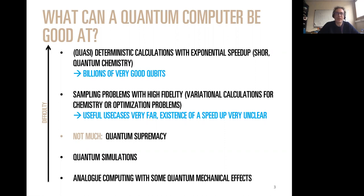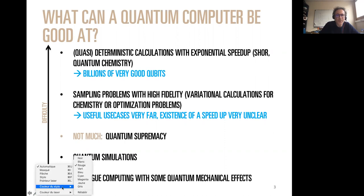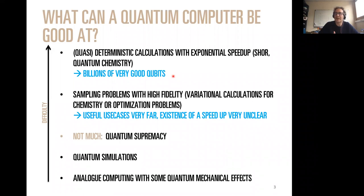The target has been shifting quite a lot with time. The initial target was essentially Shor's algorithm - cases where you could get an exponential speed-up, such as factorizing big numbers or quantum chemistry. But people realized it took some time to understand that even with quantum error correction on a very good qubit, this is a very very far-away target. And far-away targets are not good to get grant money.